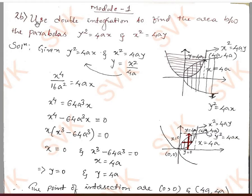The equation number 2b: use double integration to find the area between the parabolas y² = 4ax and x² = 4ay. They have given two parabolas, and we are required to find the area between these two parabolas.